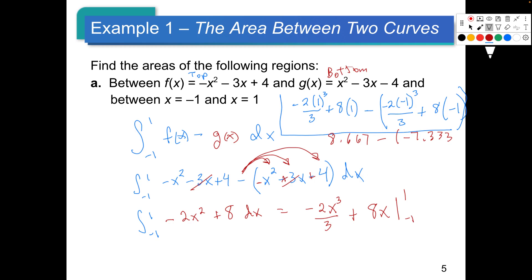Two thirds and one third makes a whole 1. Seven plus 8 is 15, plus 1 should give us 16. So if you plug this in, you get close to 16 — that should be the area between those two curves.